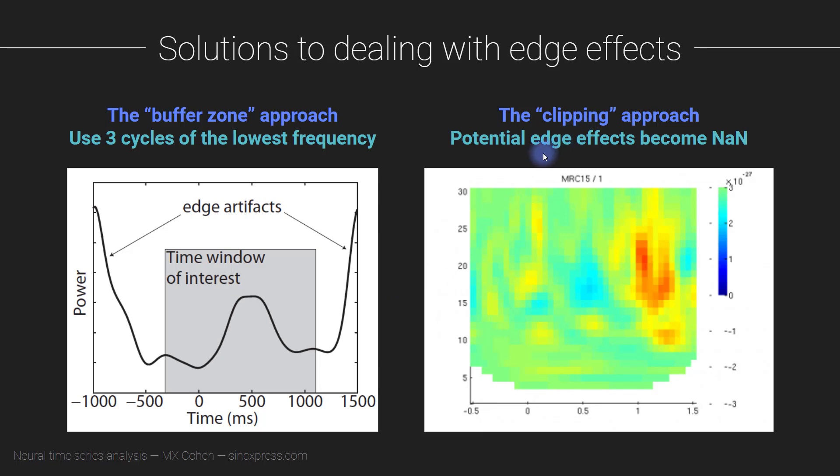And here, the idea is that you estimate what parts of the data could be contaminated by edge effects, and then you basically just remove those pixels from the time frequency plot. In practice, that can be done by setting the values to be NaN, so not a number, but that's just a detail of optional implementation.